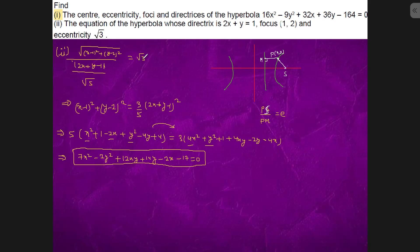We will square both the sides. It will become x minus one whole square, y minus two whole square equals to three by five, two x plus y minus one whole square.